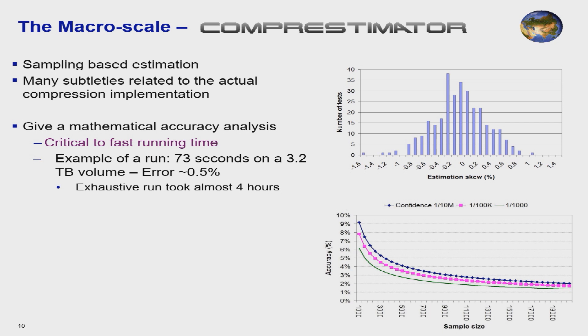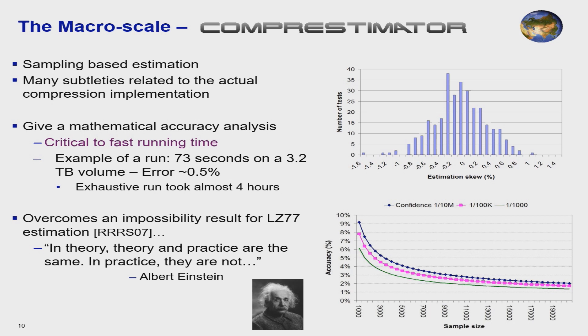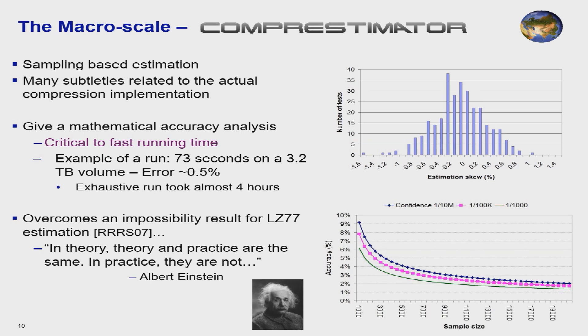I'll mention, I said there are subtleties. I'll mention there is an impossibility result coming from the theory of computer science that says, listen, there's no way you can accurately estimate Lempel-Ziv compression saving using sampling with this amount of sampling. There's just no way it's mathematically proven. And here it's really, I'll quote Albert Einstein, in theory, theory and practice are the same. In practice, they are not, because we are doing Lempel-Ziv. Most of the compressors do Lempel-Ziv, but it's not textbook Lempel-Ziv. It's not the theoretical aspect of it. So when you go and you implement compression in practice, you add some locality properties that allow you to then do the sampling really efficiently. So I'm closing the compression part of the talk now, and I'll move to the more challenging one, which is deduplication.